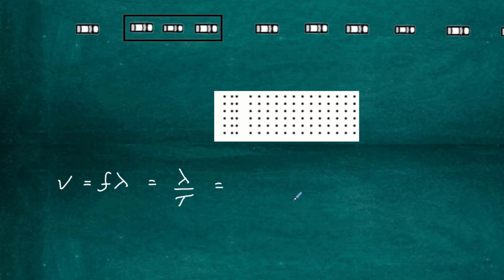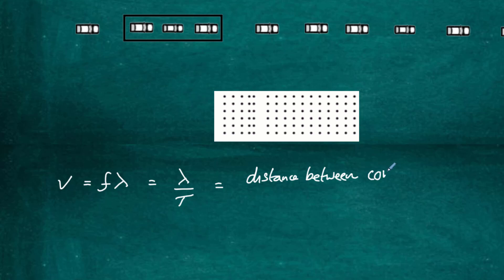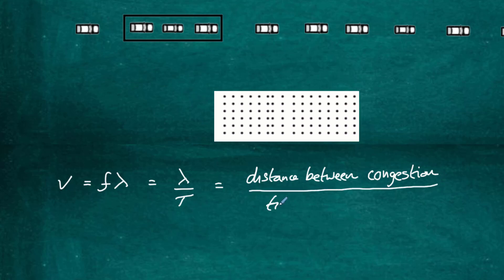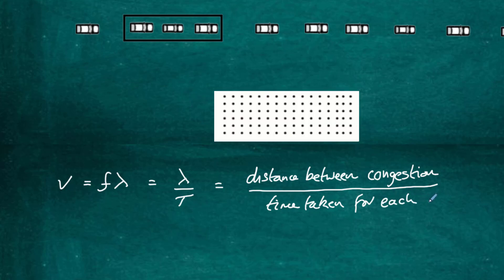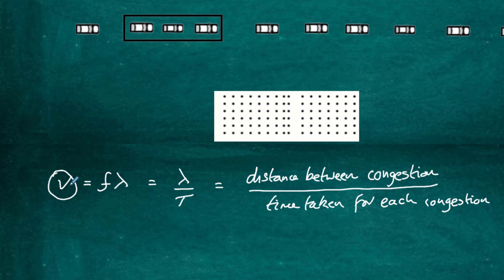The wavelength is the distance between successive compressions — the distance between congestions — which can be worked out from cameras on the gantries above the road. The period T is the time taken for each successive congestion to occur. From that information we can work out the wave speed, and the speed displayed on the gantry will be the maximum speed. If cars go faster they'll all crush together creating bigger congestion; if they travel slower the congestion has time to move away and traffic keeps flowing.